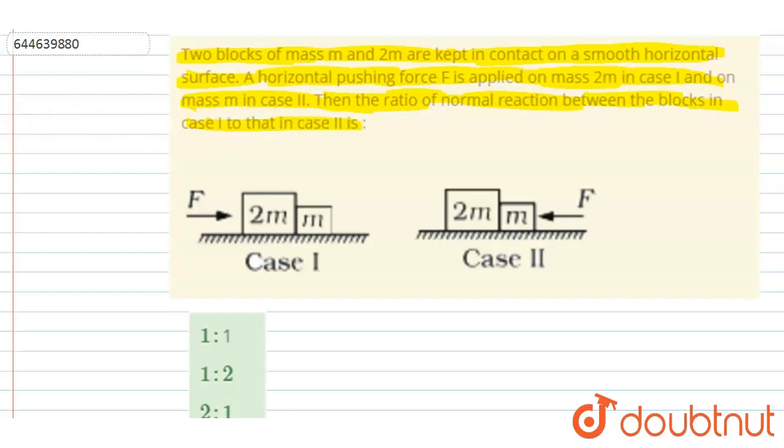that in case 2. So if you see here, if I take these two as a system, you can get the common acceleration of the whole in both of the cases. The total mass equals 3m.